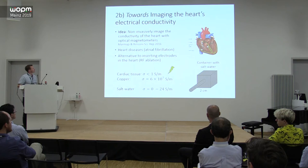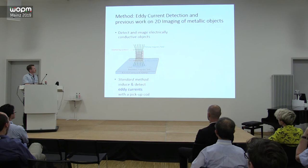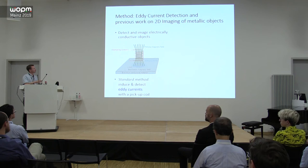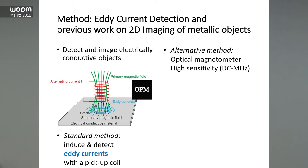The way you get signals is by inducing and detecting eddy currents. You have a piece of conductive material and a coil driven with alternating current, which produces a primary magnetic field. Due to Faraday's law of induction, eddy currents are generated in the material and produce a secondary magnetic field, which you can measure with another coil or magnetometer. You can scan or use an array to build up an image. As an alternative to pickup coils, you can use an optical magnetometer — they have very high sensitivity across a wide frequency range from DC to 2 megahertz.